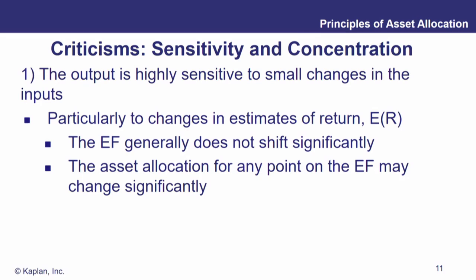The efficient frontier generally doesn't shift significantly in total. However, the asset allocation for any point along the efficient frontier may actually change significantly. Your portfolios as you look at them along the efficient frontier — the weights may change quite a bit due to relatively minor changes in the input data. So that's one criticism: you only need to change the data a little to change the results quite significantly.